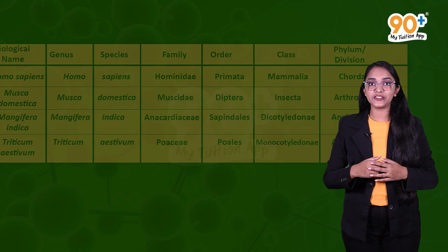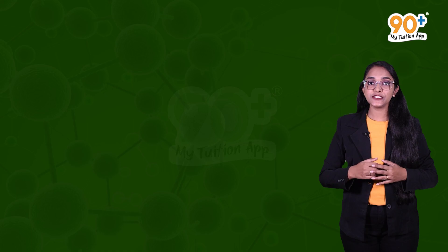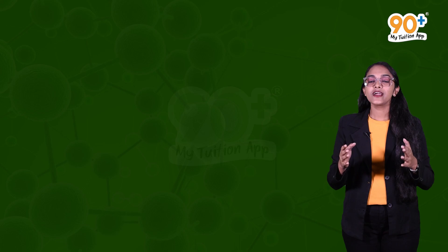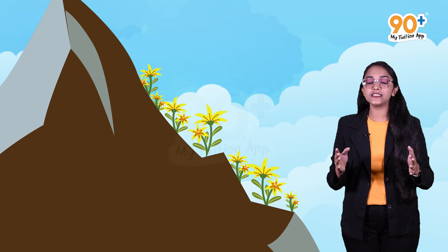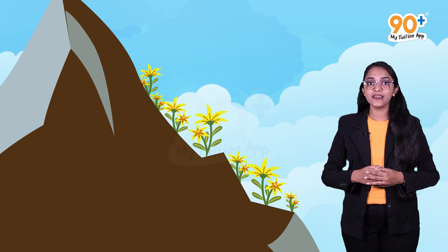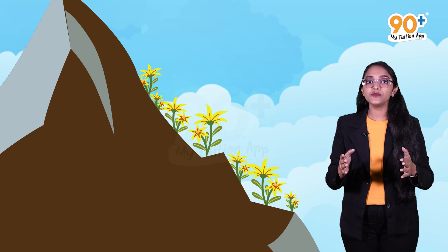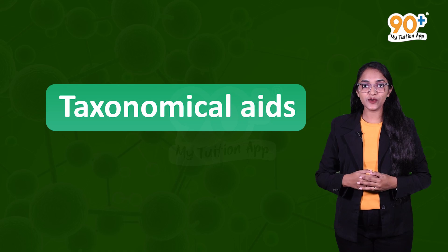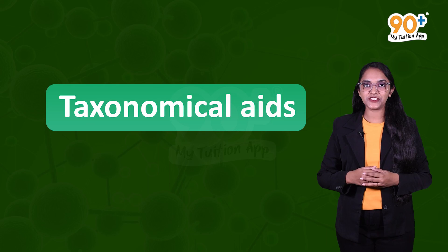Now, while conducting taxonomic studies, how do we collect organisms to place them in a particular taxon? We need to collect specimens, but it is not always possible. Consider a plant that only flowers in a particular season and grows on top of a mountain — it would be very difficult to collect. So we need to collect and store specimens for future studies. The solution is taxonomical aids — procedures and techniques to store and preserve information as well as specimens.